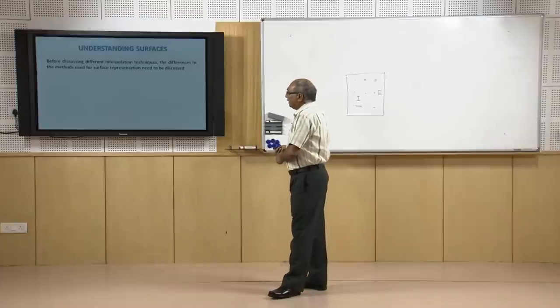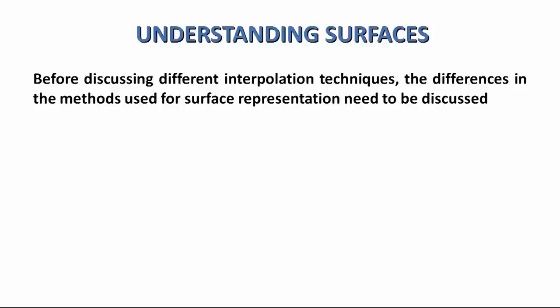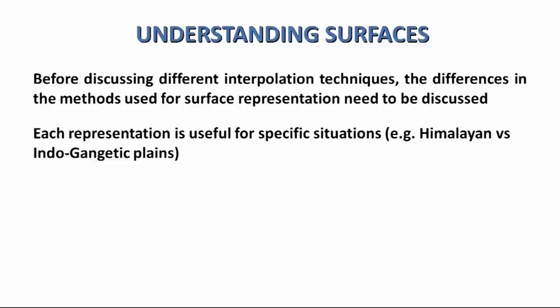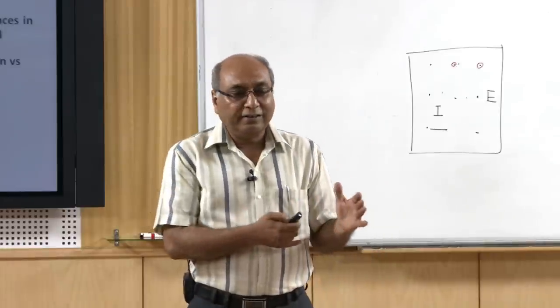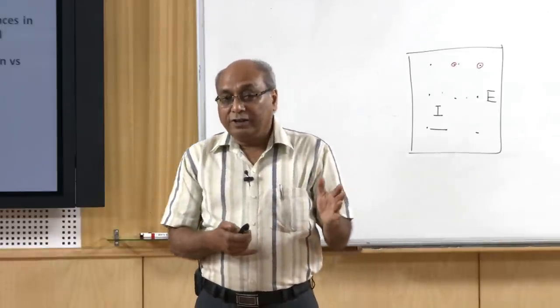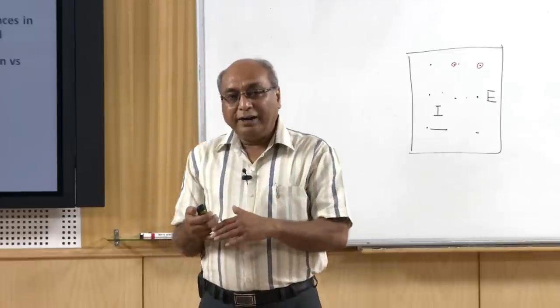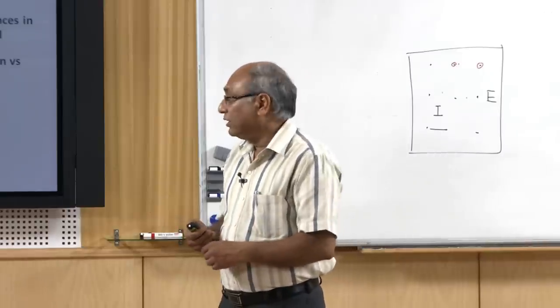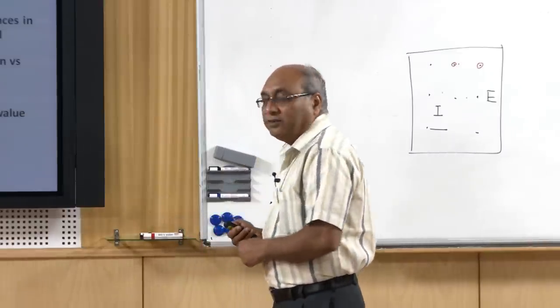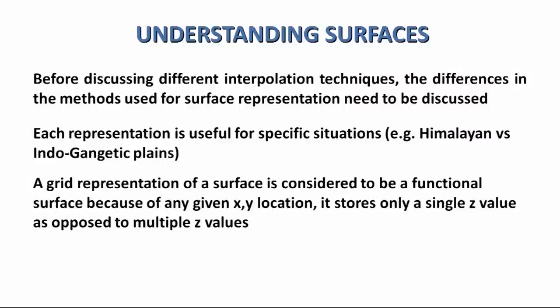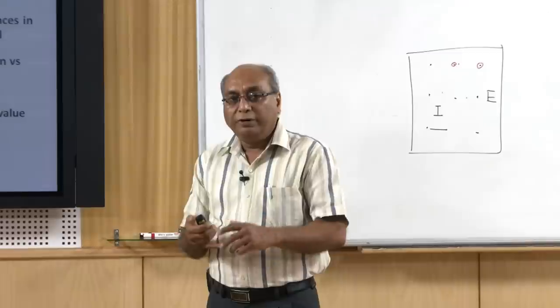Raster surfaces have a value for each equal-size cell. For different situations, the terrain conditions might differ. For Himalayan terrain the conditions are different, so the interpolation techniques might also be different. For point data of an endogenetic plain, interpolation might be different too. We must understand the phenomenon and have local information available to help choose the right interpolation technique.